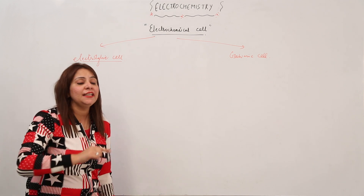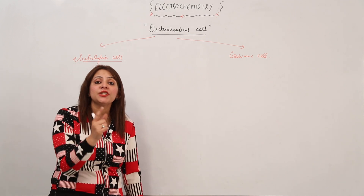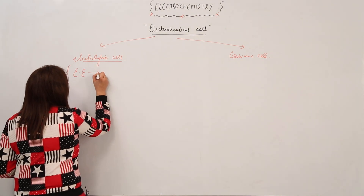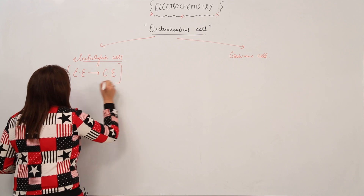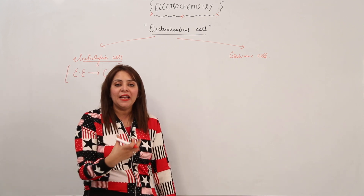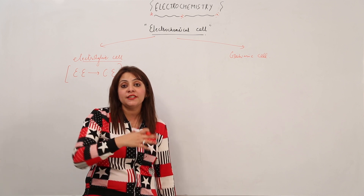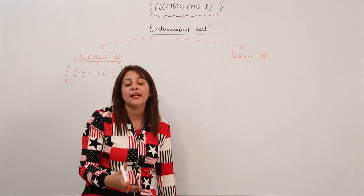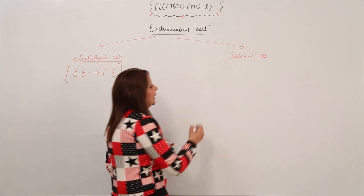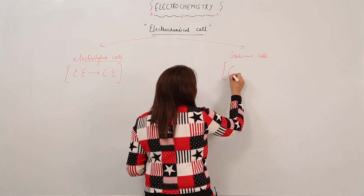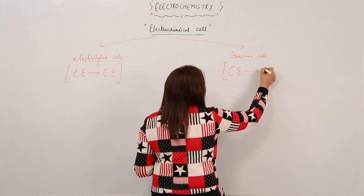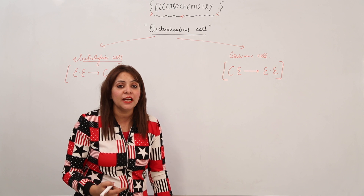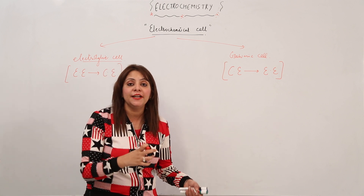In these cells, which kind of conversion occurs? In an electrolytic cell, electric energy is converted into chemical energy. We apply an external source of current, and due to that external source, the chemical reaction takes place. In the case of the galvanic cell, it is just the vice versa — the chemical reaction takes place and it leads to the production of electric energy. Here we don't need an external source of current; automatically the chemical reaction will occur and produce the current.